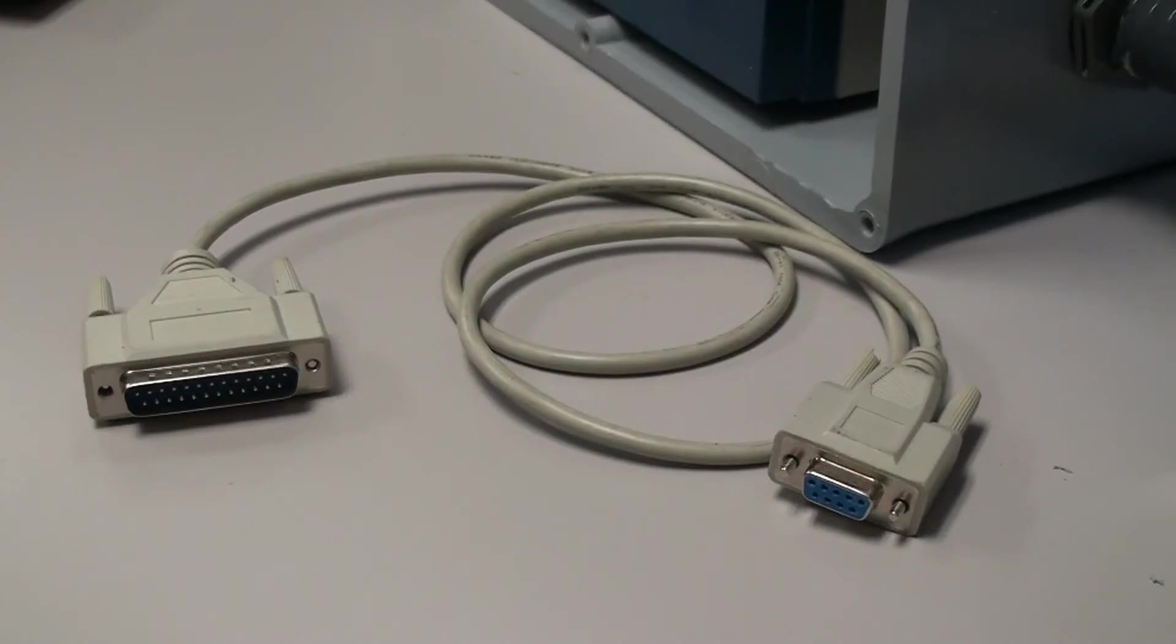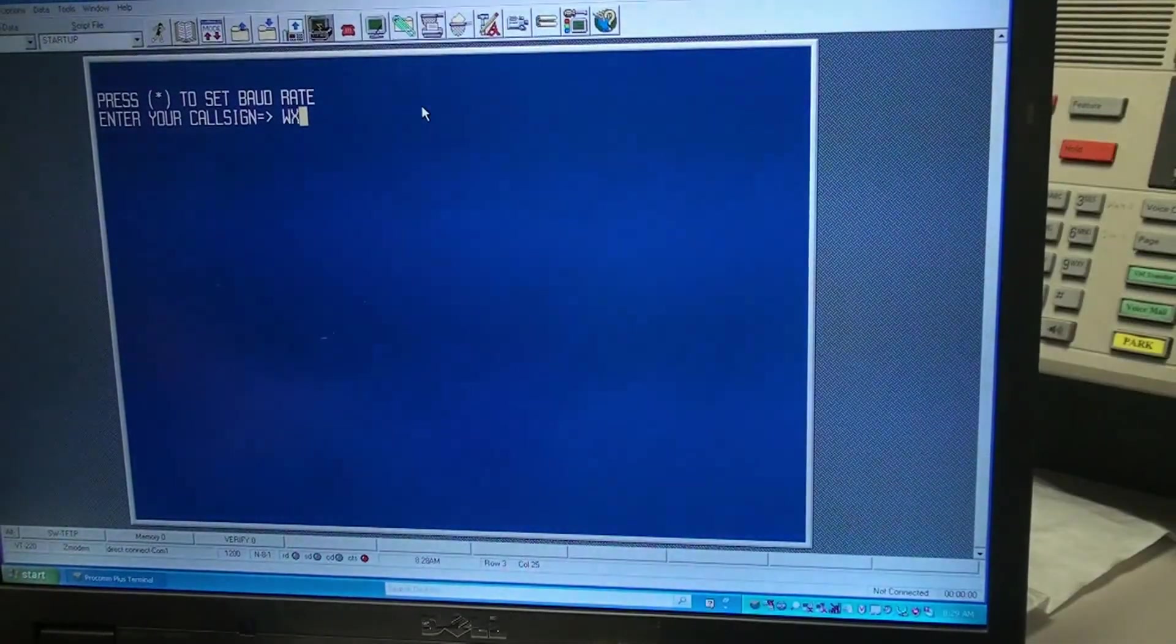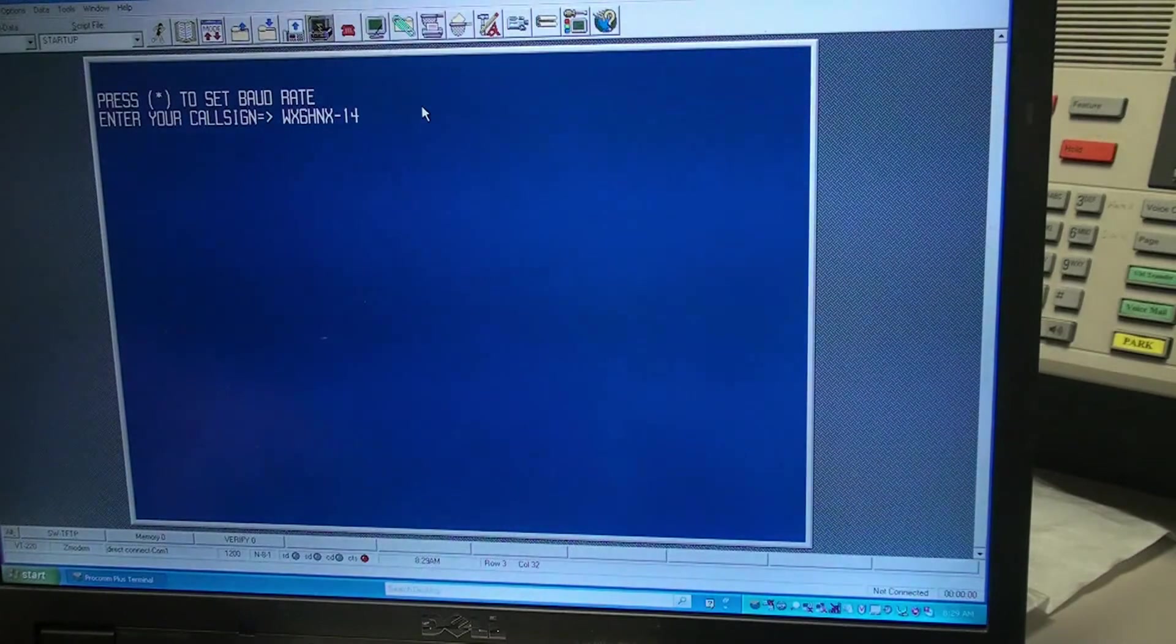To program the TNC, you'll need a DB25 male to DB9 female cable. Once connected, program your TNC using the following commands. Be sure to substitute the call sign with your own.